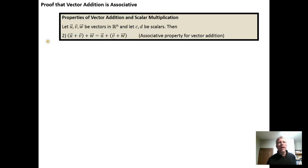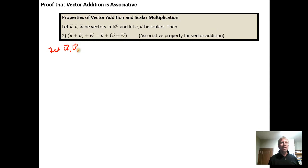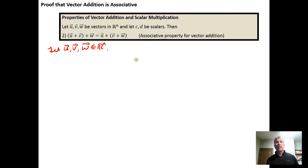For a formal proof of that, the first thing you're going to do is define the objects you're proving something about. So in this case, to prove this, we let u, v, and w be elements of the vector space Rn. Now we know we have three vectors, each of which has n components.